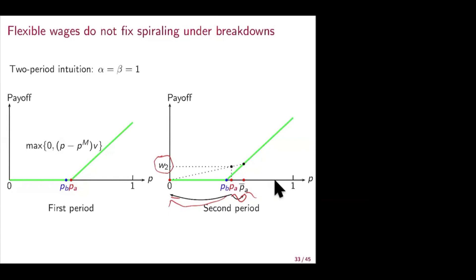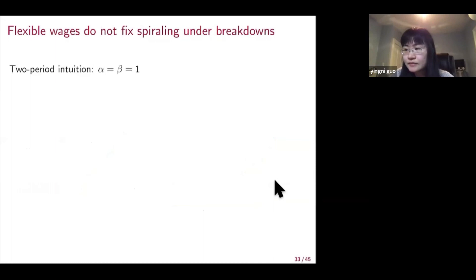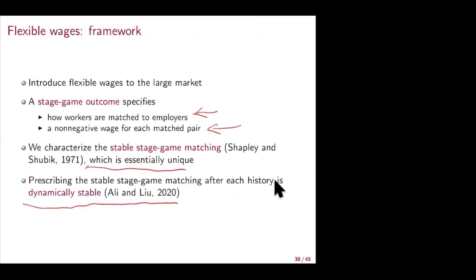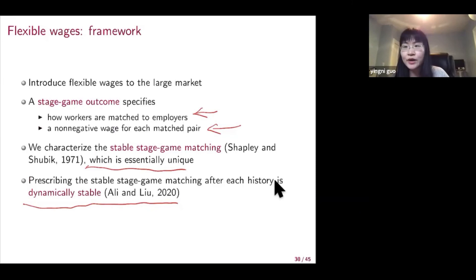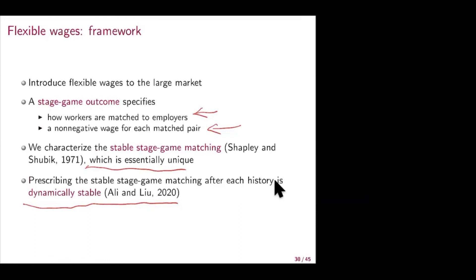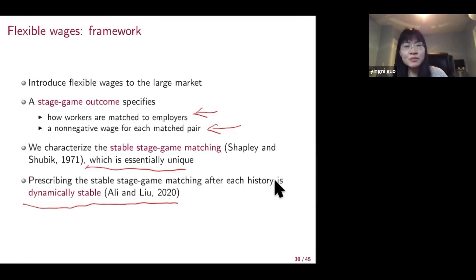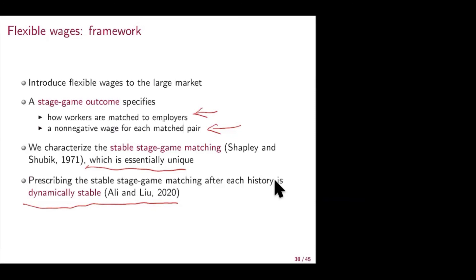This is a market environment, which is why we use Shapley and Shubik. You seem to be assuming that employment history with one firm is observable to other employers? Yes, we are assuming that everything is public. We read the paper by Chi Ming and other related papers very carefully, and we wouldn't be able to say much if we moved away from that assumption.